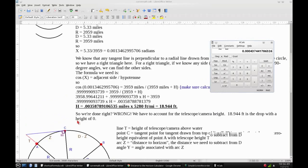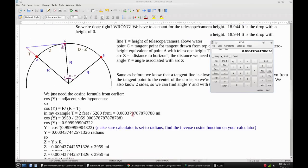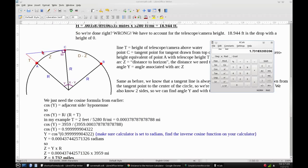So we just need to take our arc length formula from before. Arc length equals angle in radians times the radius, and we're going to solve for Z. So Z equals Y times R. So Z equals this number times 3,959 miles, and that gives you 1.732 miles. So that's your distance to horizon.